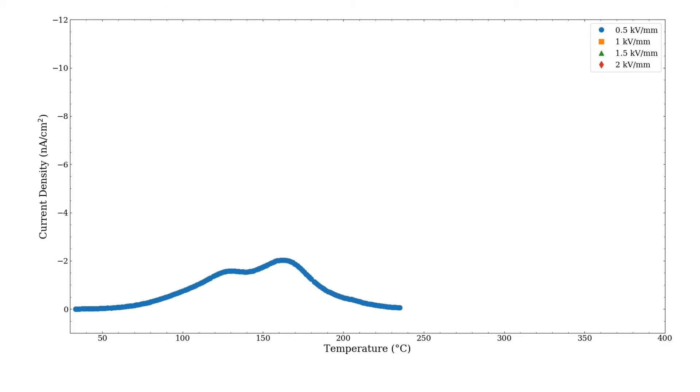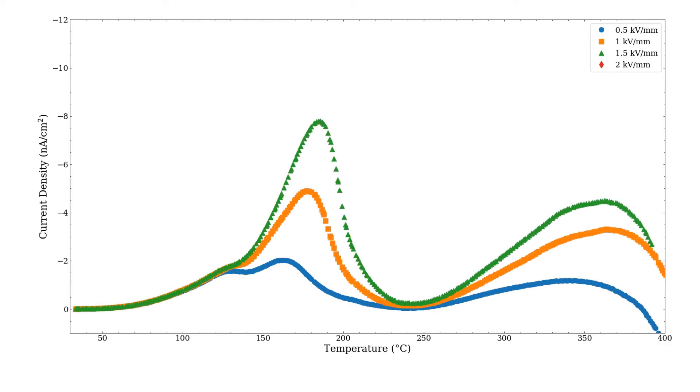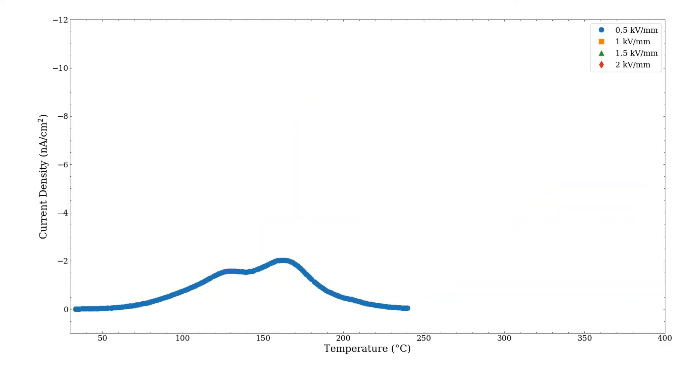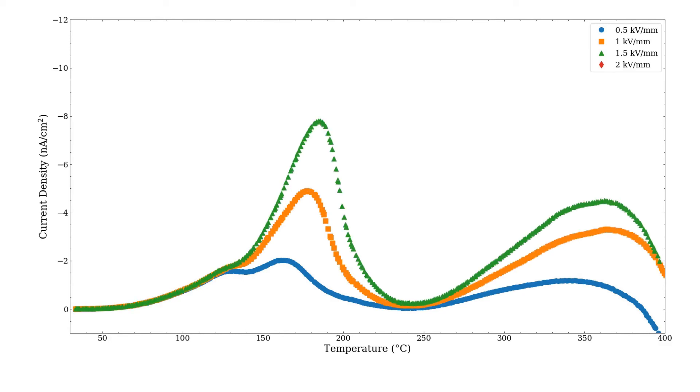We can see the TSDC results of iron-doped strontium titanate polarized at 250 degrees Celsius under different electrical fields. For each TSDC measurement, we recorded three different TSDC relaxation peaks. The physical origin of these relaxation currents can be distinguished by studying the polarization electrical field dependence of temperature at peak maximum of each TSDC depolarization current peak.